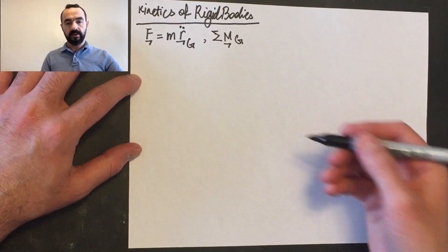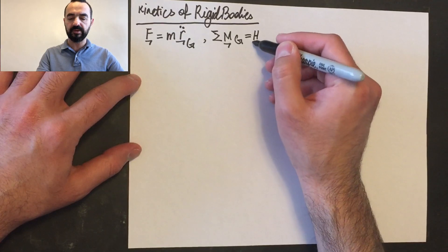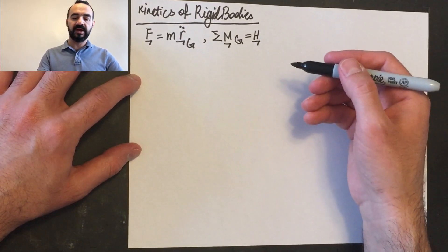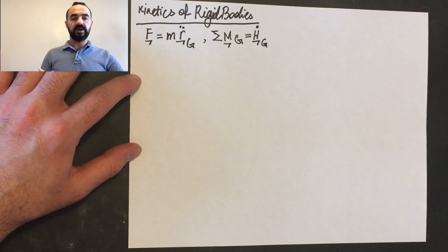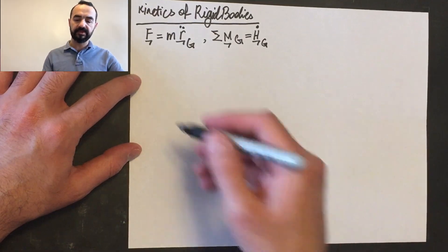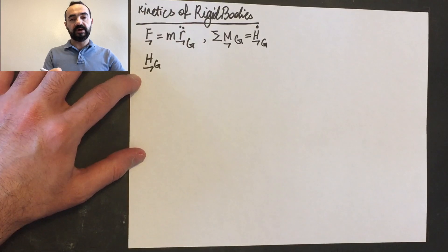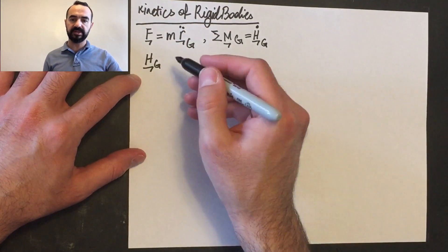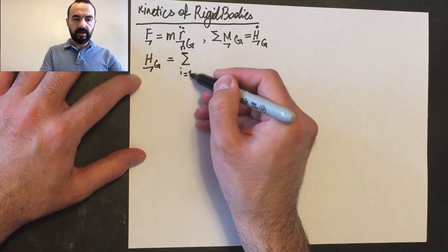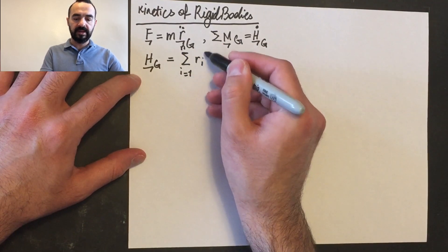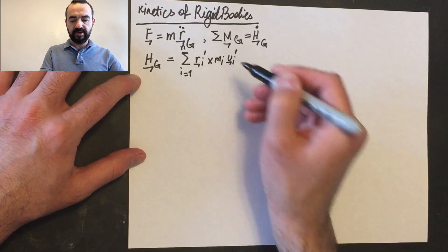We said that sigma M — the sum of moments about the center of mass — was equal to Ḣ_G, the rate at which the angular momentum about the center of mass changes. The angular momentum H for a system of particles was equal to the sum from i equals 1 to N of r_i′ cross m_i times v_i′.